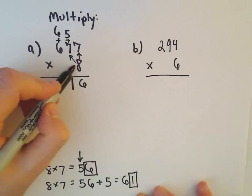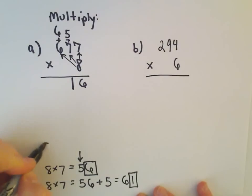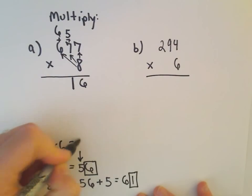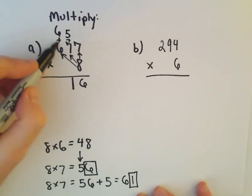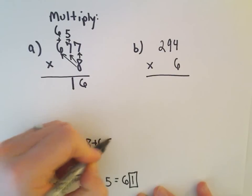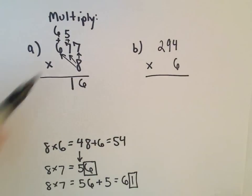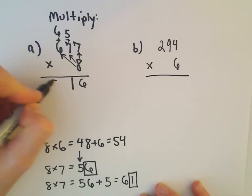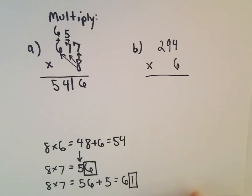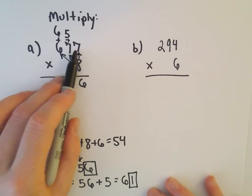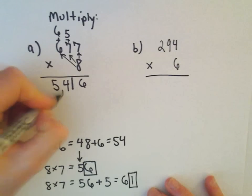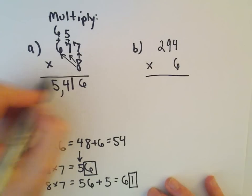So let's see, 8 times 6 is going to give us 48. And then again, we just add 6 to that, and that's going to give us 54. And we've kind of multiplied now by all of the digits, so we just drop that down, 54. So it says if you take 677 and multiply that by 8, you'll get 5,416.